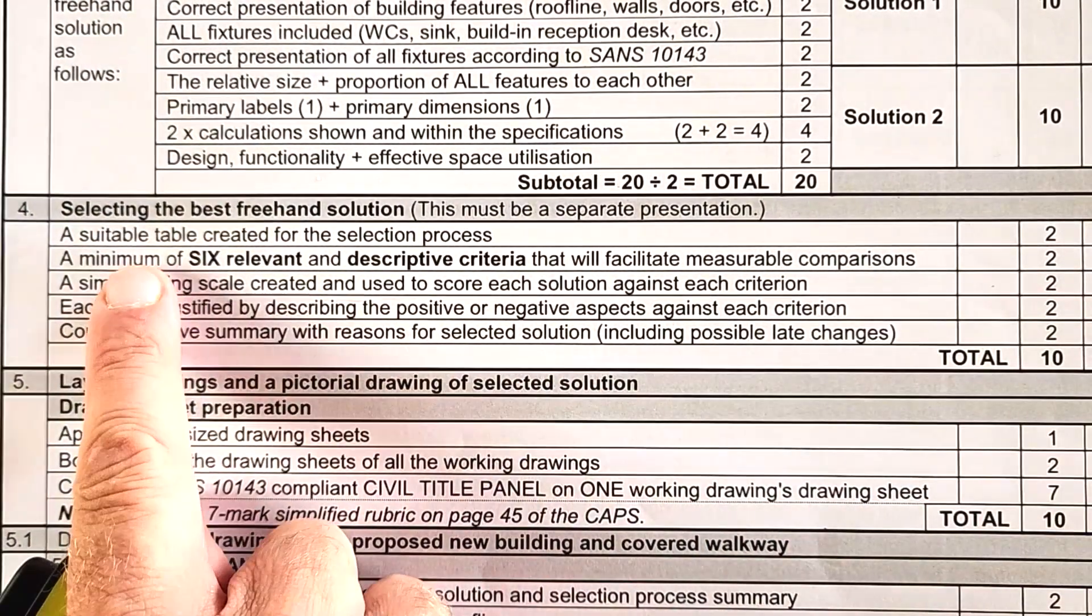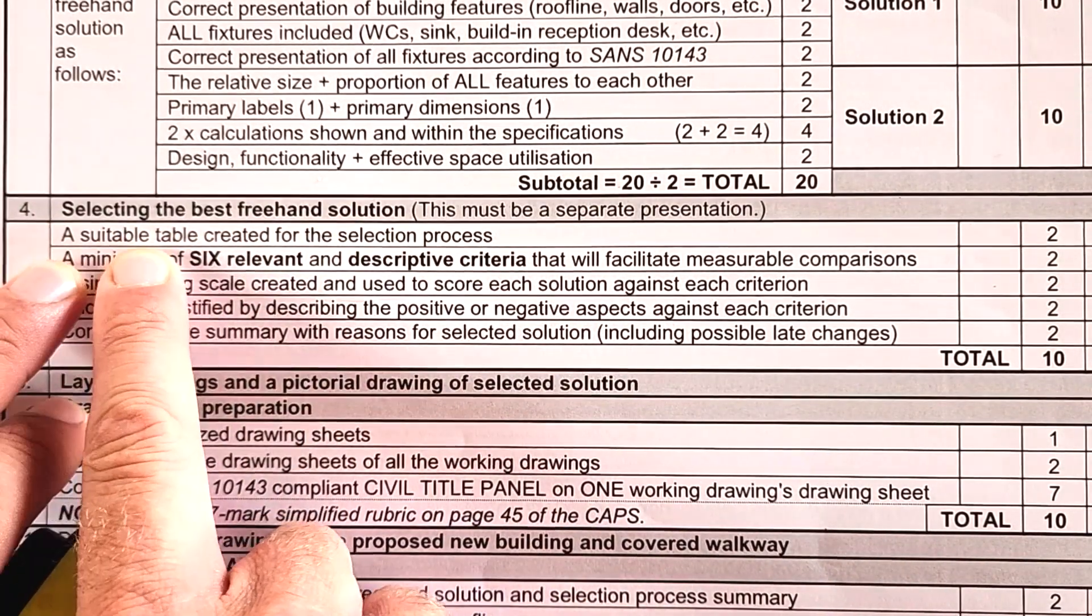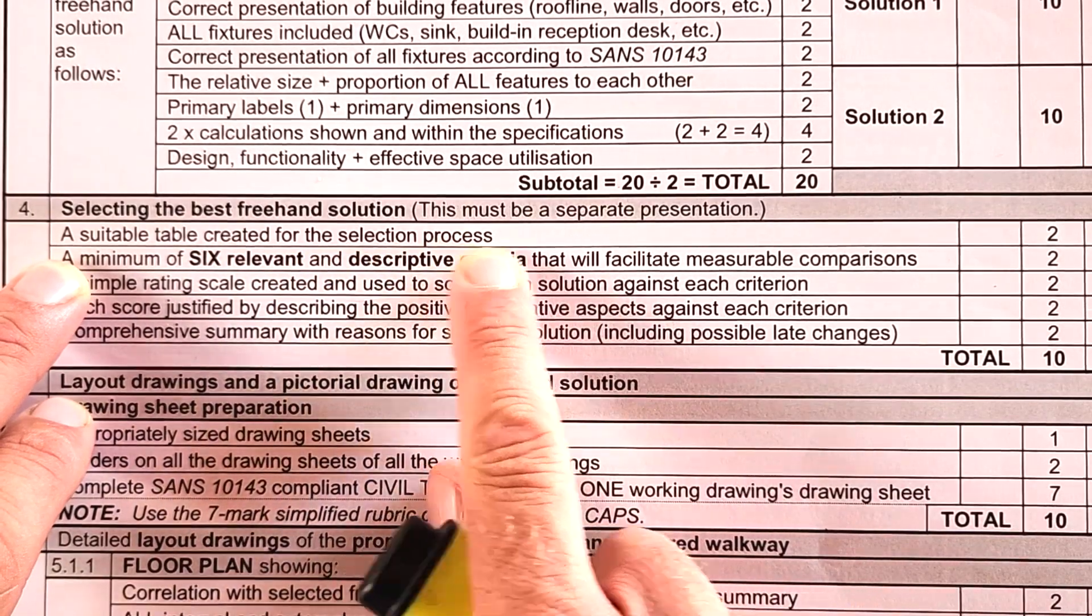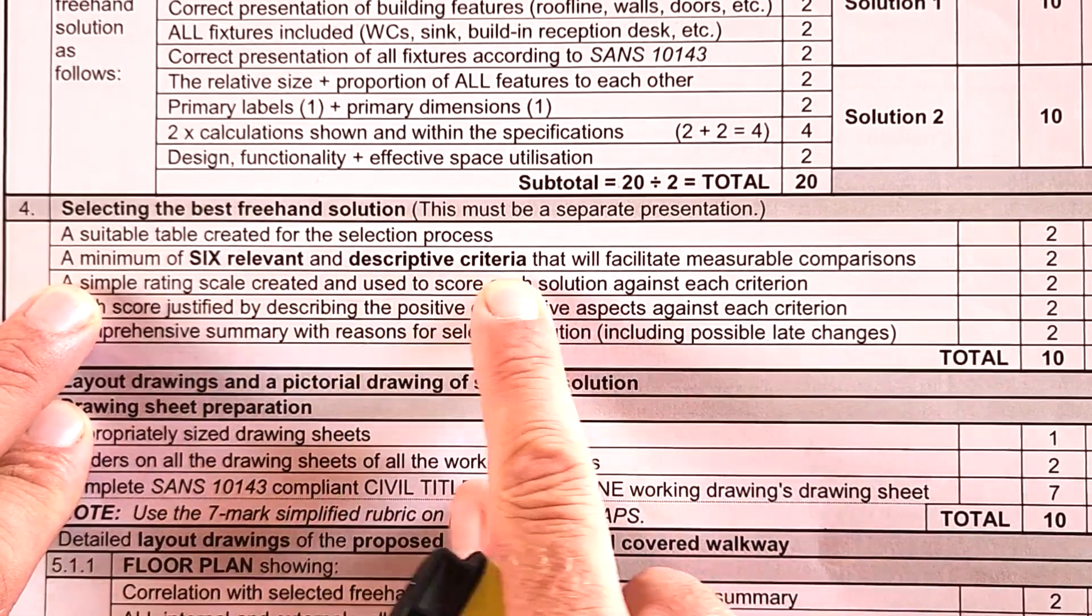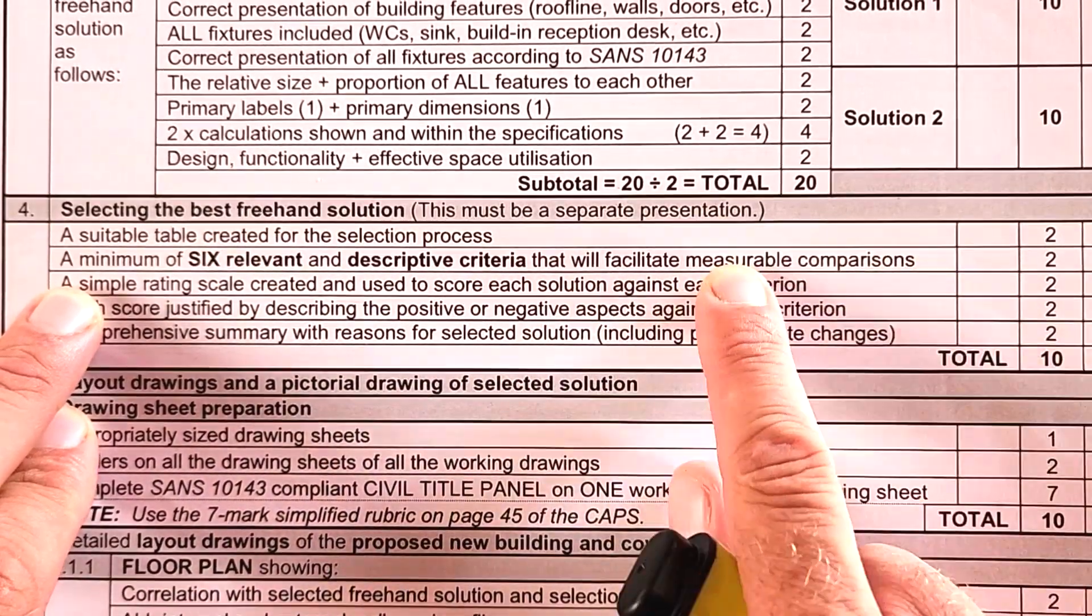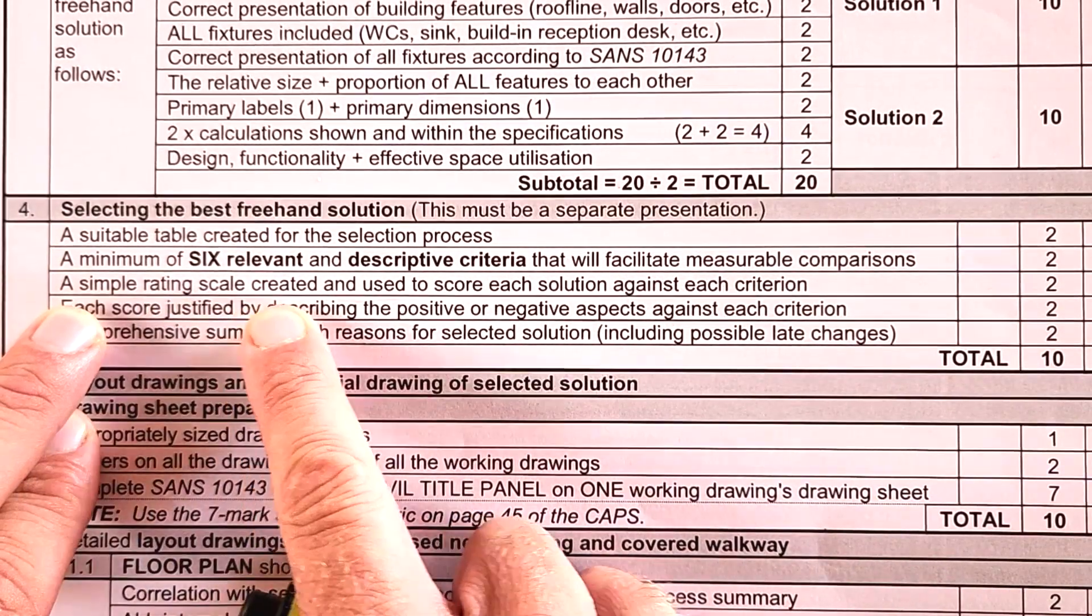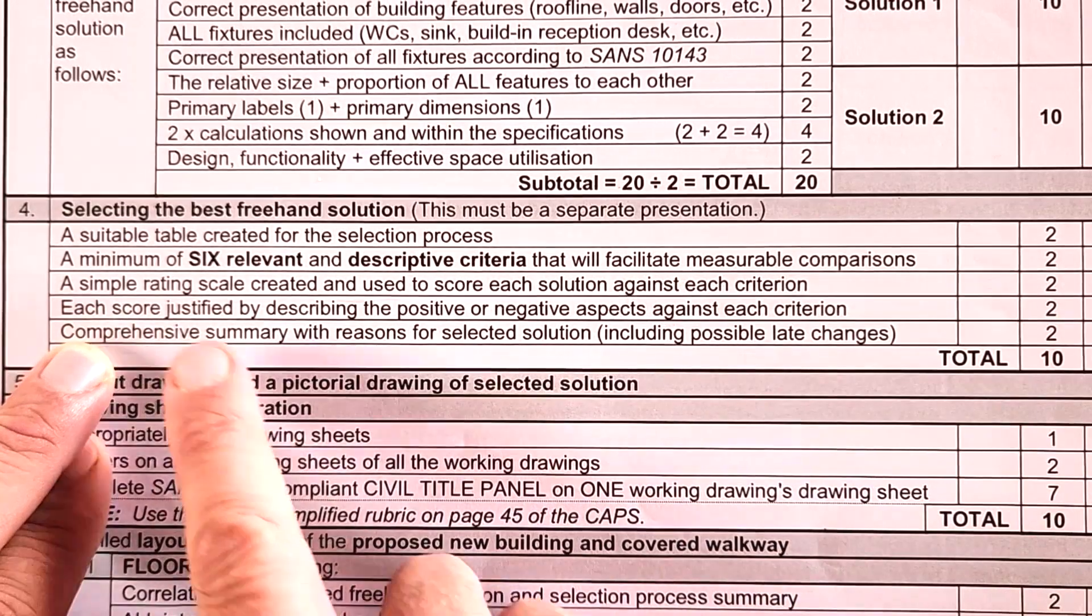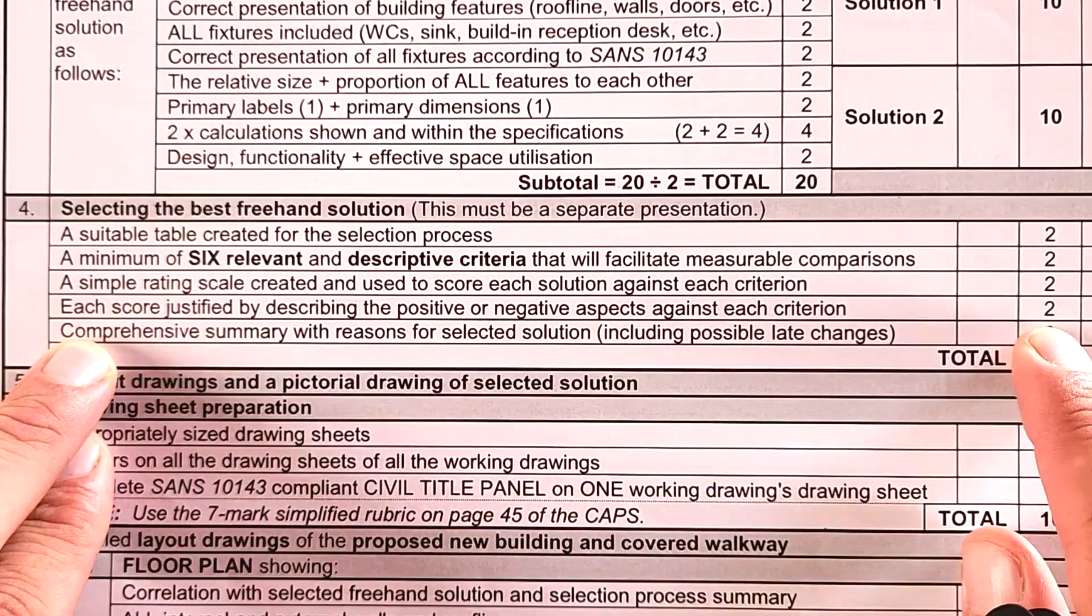Here's the grading for selecting the best freehand solution: Did you come up with a suitable table created for the selection process, two out of two? Minimum of six relevant and descriptive criteria that facilitate measurable comparisons, two out of two. Simple rating scale created and used to score each solution against each criterion, two out of two. Each score justified by describing positive and negative aspects, two out of two. And your summary in the end, two out of two.